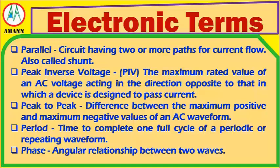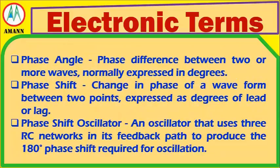Peak-to-Peak: the difference between the maximum positive and maximum negative values of an AC waveform. Period: the time to complete one full cycle of a periodic or repeating waveform. Phase: an angular relationship between two waves. Phase Angle: a phase difference between two or more waves, normally expressed in degrees.